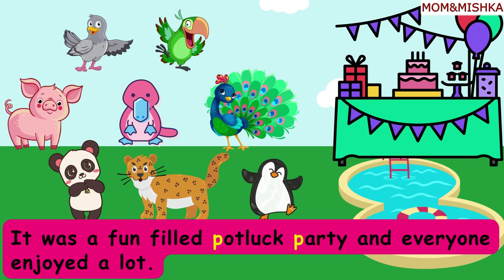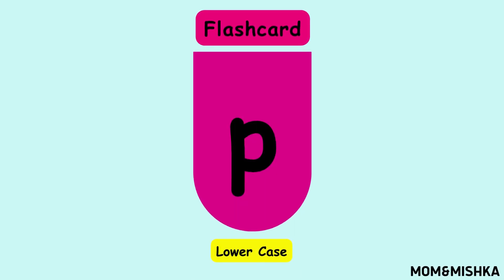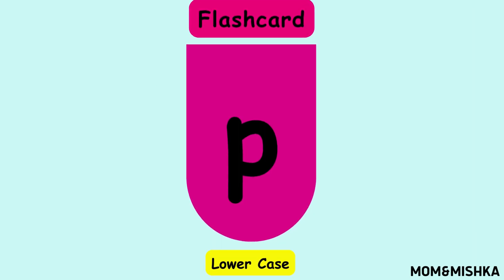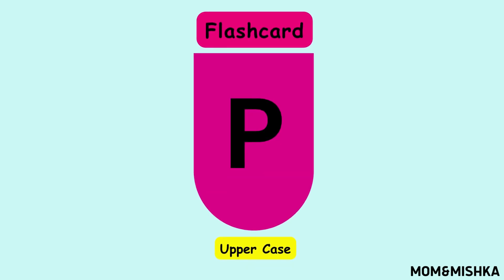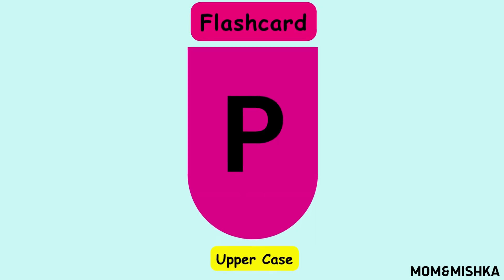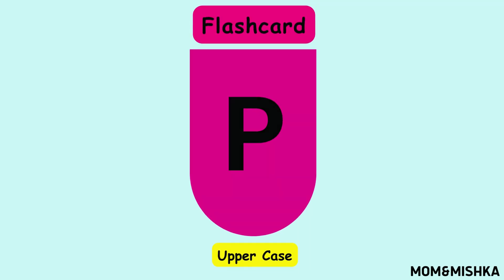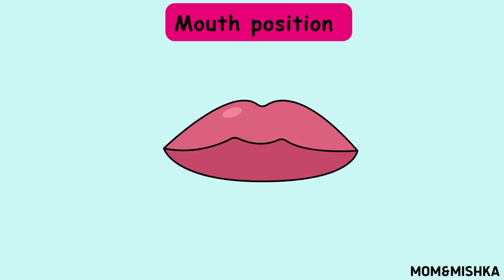Now we will see how the letter P looks. This is lowercase p, or we call it small p. This one is uppercase P, and we call it big P.